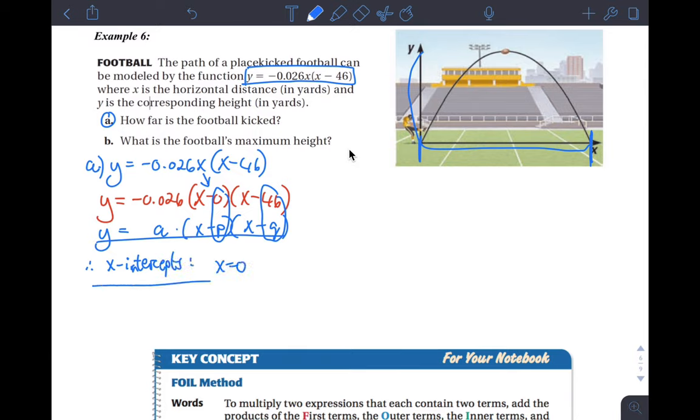My two x-intercepts are x equals 0, well that would be right here, x equals 0, and x equals 46, well that would be right here. And since they said here x is the horizontal distance in yards, it means this distance right here is 46 yards.